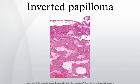When it occurs in the urinary tract, it may cause blood in the urine. Inverted papillomas are definitively diagnosed by histologic examination.